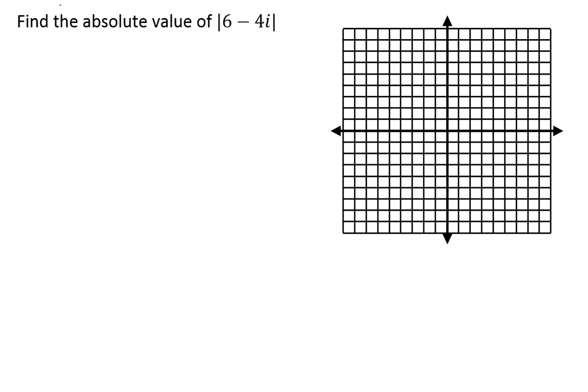If I look at the number 6 minus 4i on the complex plane, that has a location at 1, 2, 3, 4, 5, 6 on the real axis, and then down 1, 2, 3, 4. So this is the number right here. That's the number 6 plus 4i. And the absolute value of that number is how far that number is from the origin.